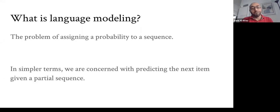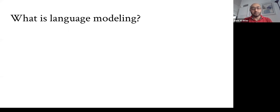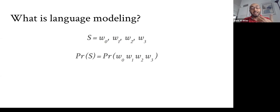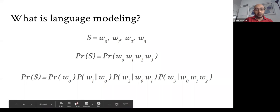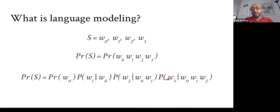Language modeling is the problem of assigning a probability to a sequence — essentially predicting the next word given a prefix or context. In mathematical terms, given a sequence of four words, we estimate the likelihood using the chain rule: the probability of the first word, then the conditional probability of the second word given the first, the third given the first two, and so on.